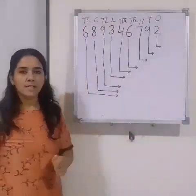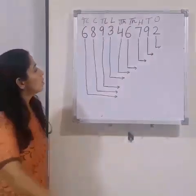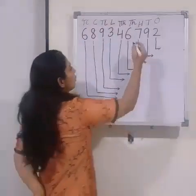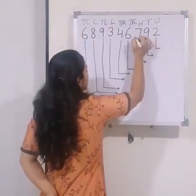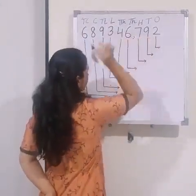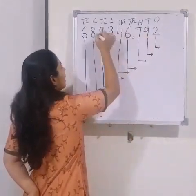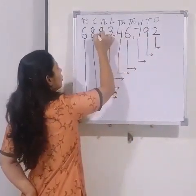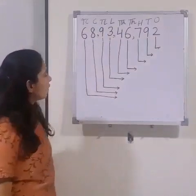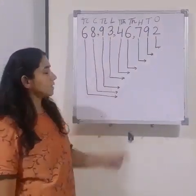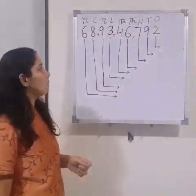Now we will put commas according to the Indian system. First we put a comma after 3 digits, then after 2 digits, and again after 2 digits. This is the way we place commas in the Indian system.